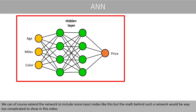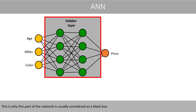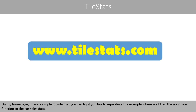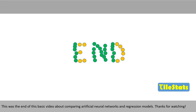We can, of course, extend the network to include more input nodes, but the math behind such a network will be way too complicated to show in this video. This is why this part of the network is usually considered as a black box. On my homepage, I have a simple R code that you can try if you like to reproduce the example where we fitted the nonlinear function to the car price data. This was the end of this basic video about comparing artificial neural networks and regression models.